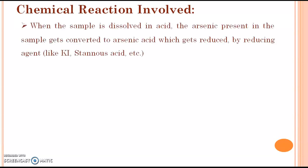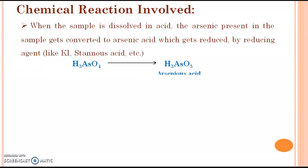When the sample is dissolved in acid, if it contains an arsenic impurity, this arsenic gets converted to arsenic acid, which gets reduced by a reducing agent like potassium iodide or stannous acid. Here is the reaction — it will form arsenous acid.